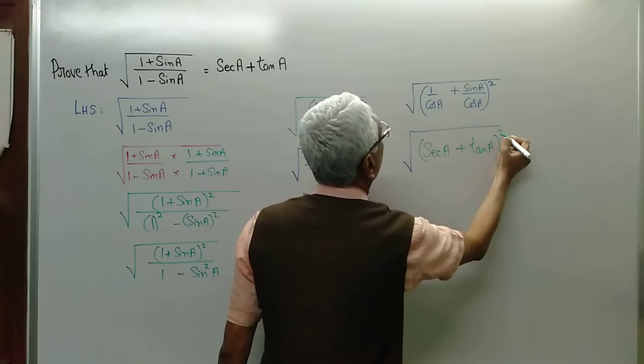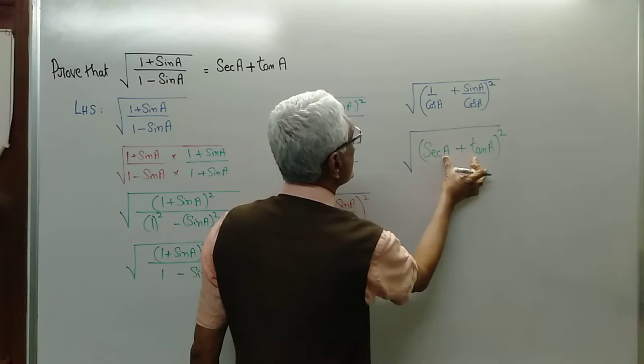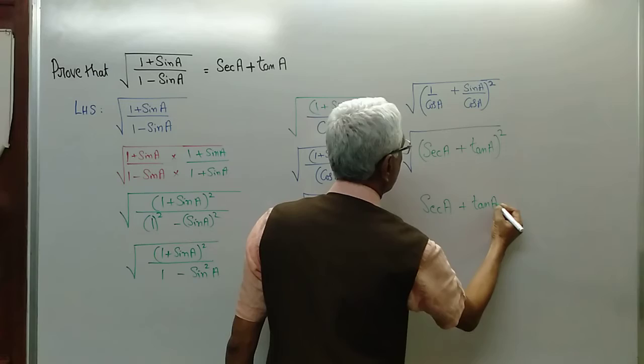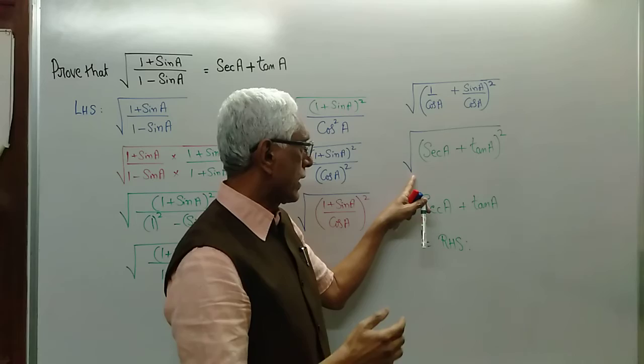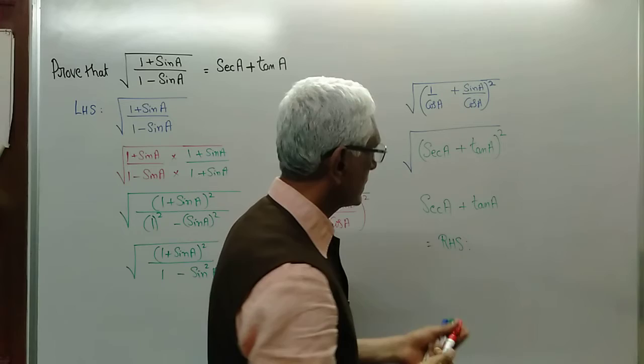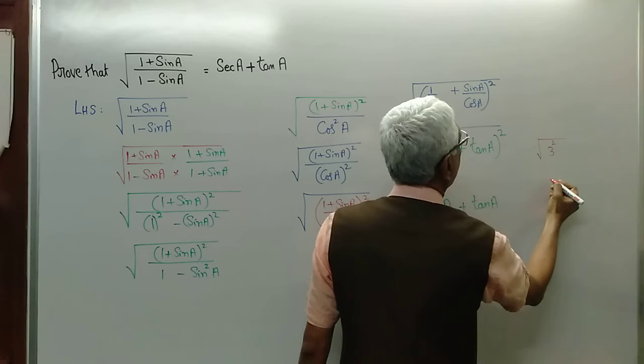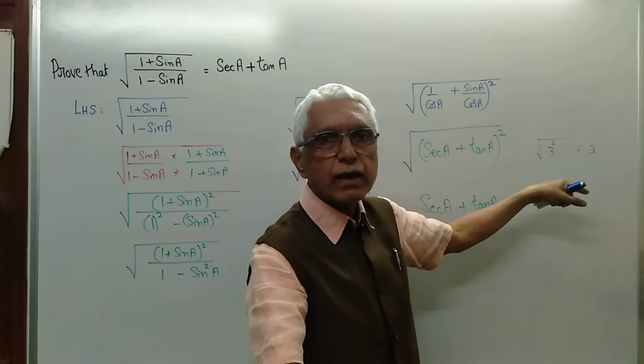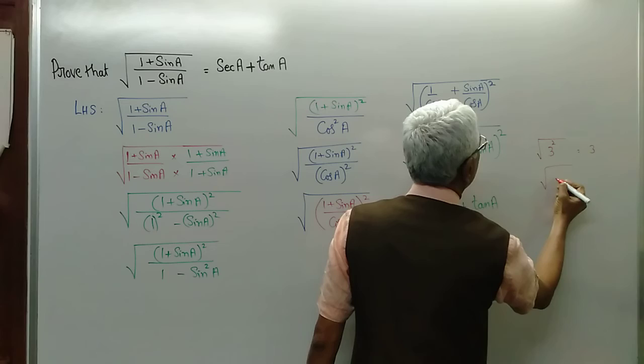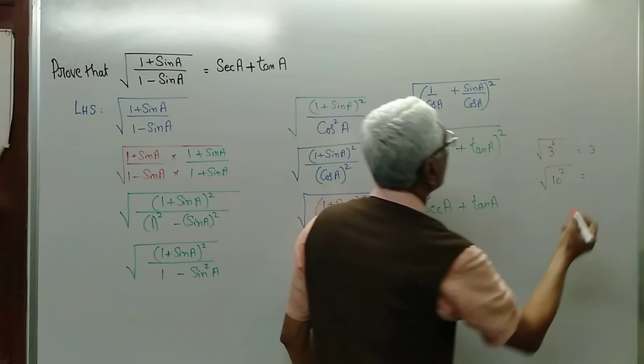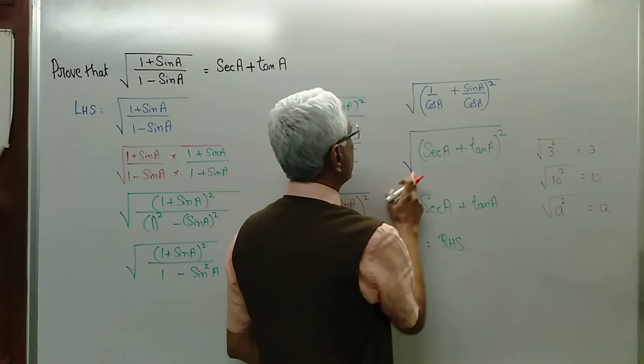Now, what is 1 by cos a? It is secant a. And sin a by cos a is tan a. So we have (secant a plus tan a) whole square. And square root of the square of something is that something. For example, square root of 3 square is 3; square root of 10 square is 10. Similarly, square root of (secant a plus tan a) square is secant a plus tan a — which is your right hand side. Wonderful.